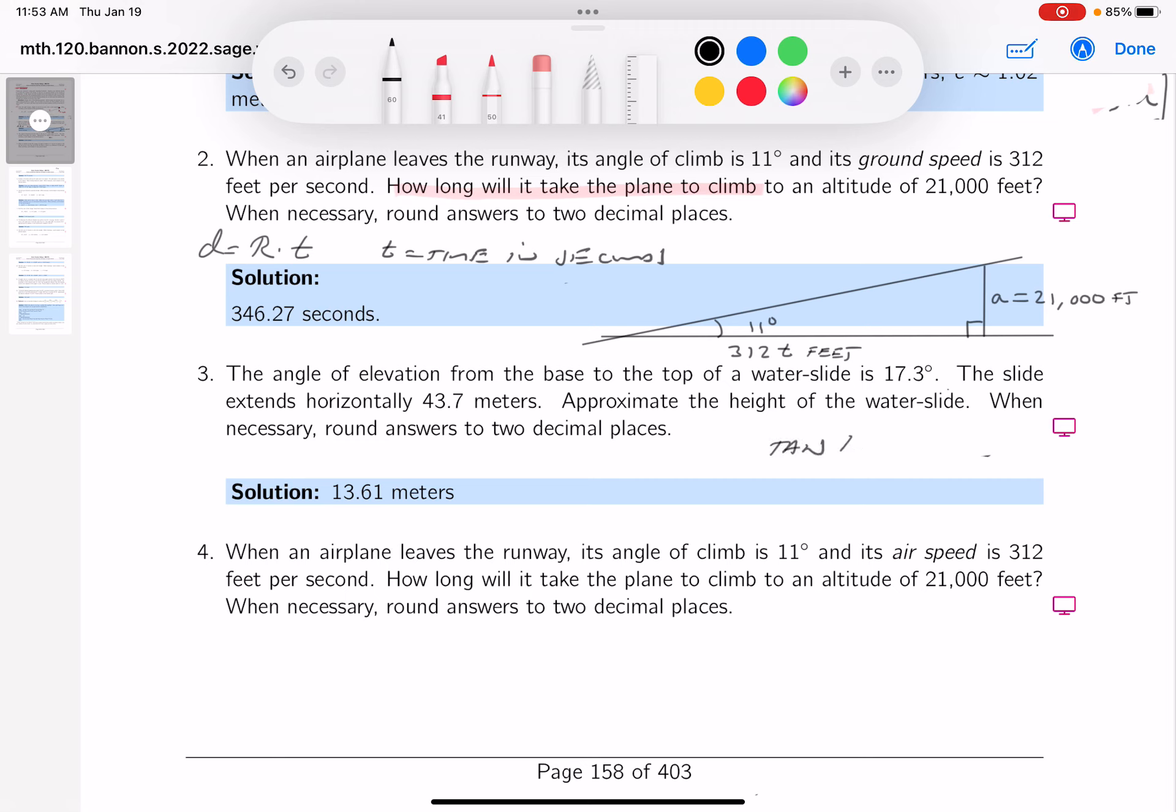Again, if this is an exam question, this is what we'd be looking for from you. And then we'll talk about the answer we want to see from you. So what is it going to be? Well, the opposite is 21,000 feet. I'm not going to put feet down. And the bottom is 312 feet. Feet would actually cancel off.